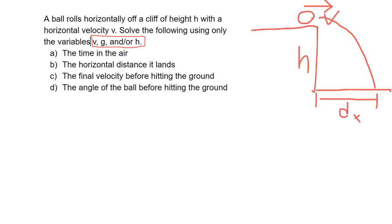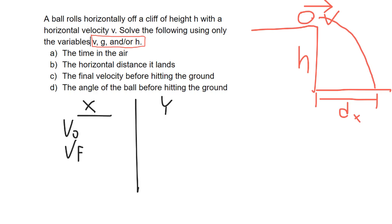So we're looking for four things, and again we want to make sure our answer is expressed only in terms of V, G, or H. Just like we usually do, we're going to set up our givens. Because it's two dimensions we're going to have X's and Y's. In the X direction, let's look at our variables: V initial, V final, A, delta D, and T.